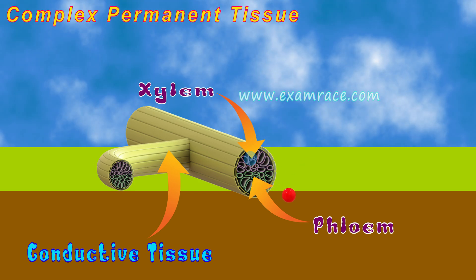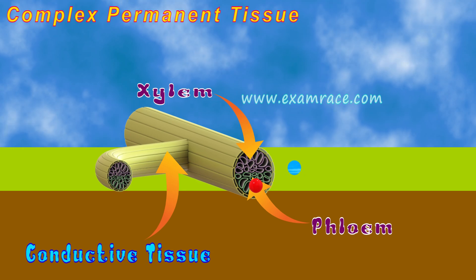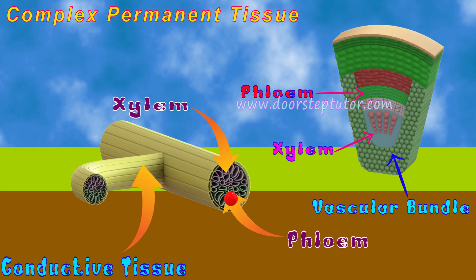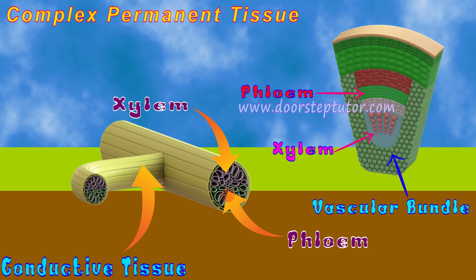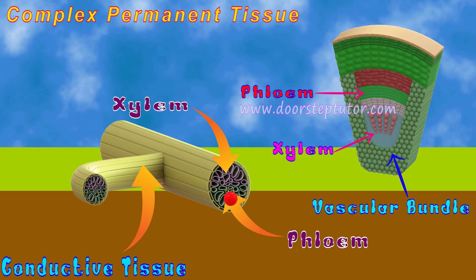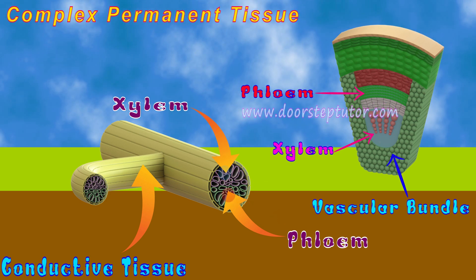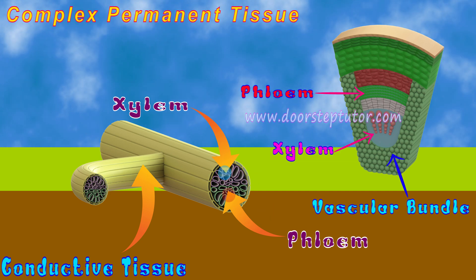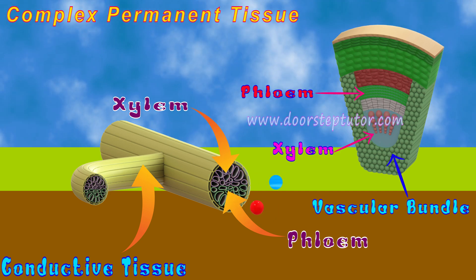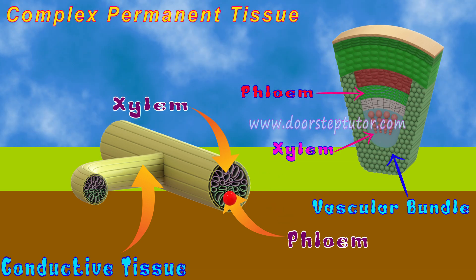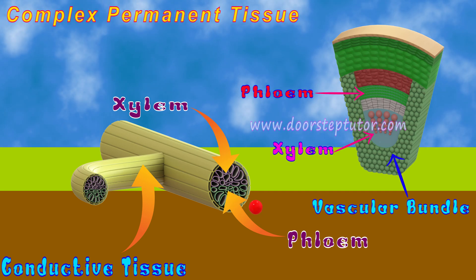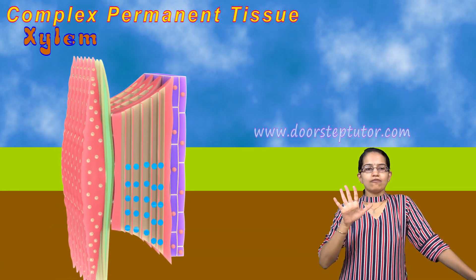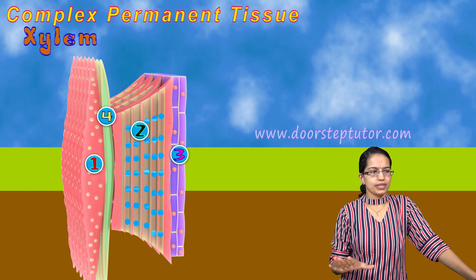Xylem and phloem are part of the vascular bundle. Complex tissues have more than one type of cell, all performing a common function. Now we will understand the components of xylem and phloem one by one.